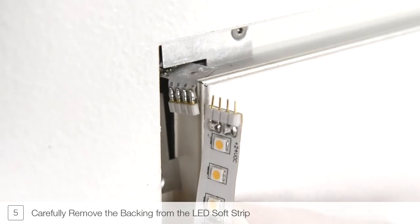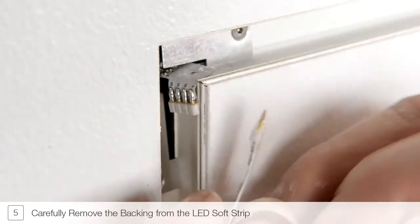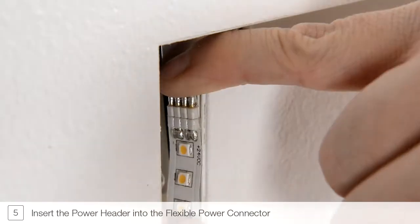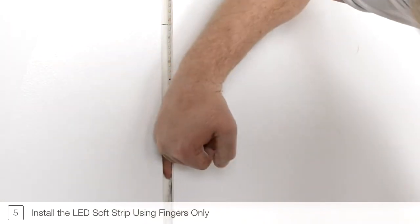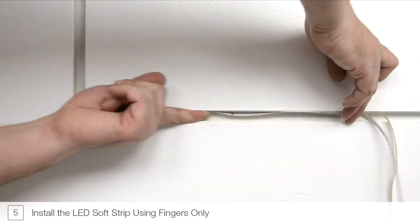Begin installing the LEDs by removing a small section of the paper backing from the strip. Insert the power header into the flexible power connector. Gently press the adhesive backing of the soft strip into the channel while continuing to remove the paper backing.